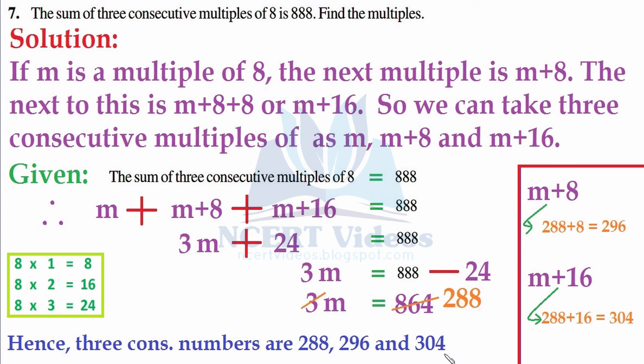Hence, three consecutive numbers are 288, 296, and 304. To check our solution, if we now add 288 plus 296 and 304, it gives us 888, and with this we are sure that our answer is correct.